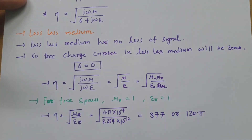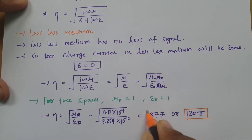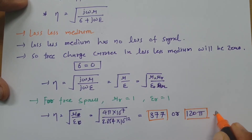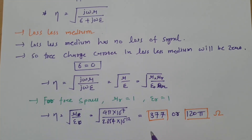So for free space in examples, we consider intrinsic impedance equal to 120π or 377 ohms. The unit of intrinsic impedance is ohms. This is the calculation of intrinsic impedance for lossless medium.